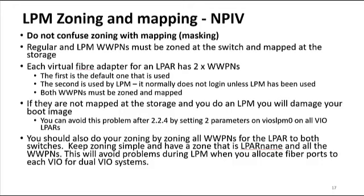I try to keep my zoning very, very simple. I see some incredibly complex zoning on switches, and the problem is that with LPM, it will pick which FCS it puts the worldwide port numbers on. People tend to do zone names like LPAR_FCS_adapter_address, which doesn't work well with LPM. What you're going to want to do is zone all the WWPNs for the LPAR on both switches. Then there's no confusion — LPM will work and you won't run into the kind of problems you get when you don't get it right.